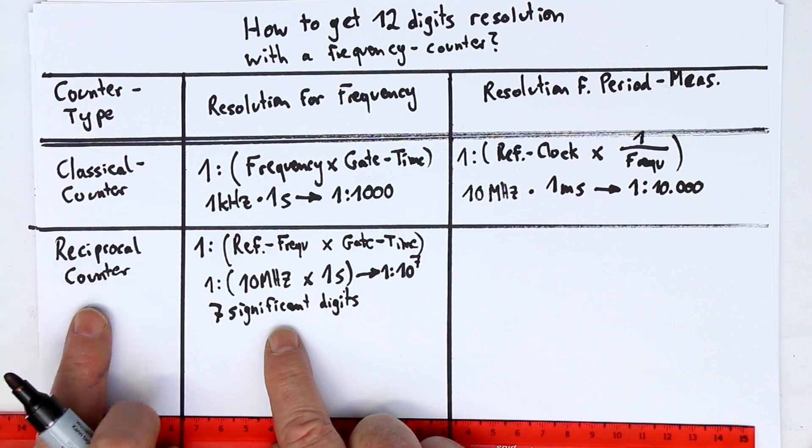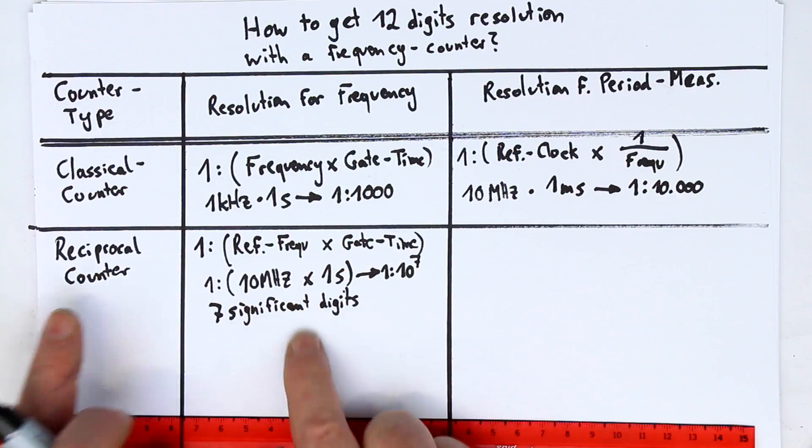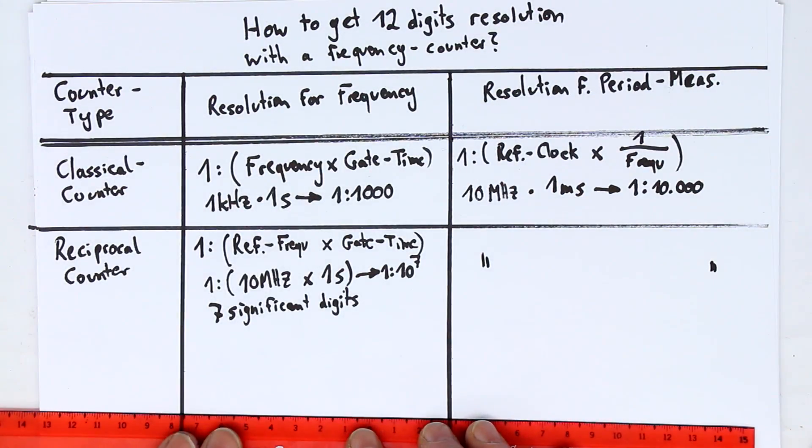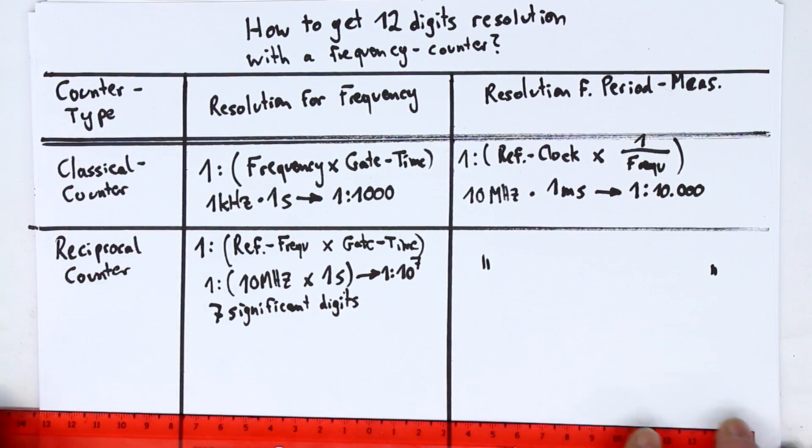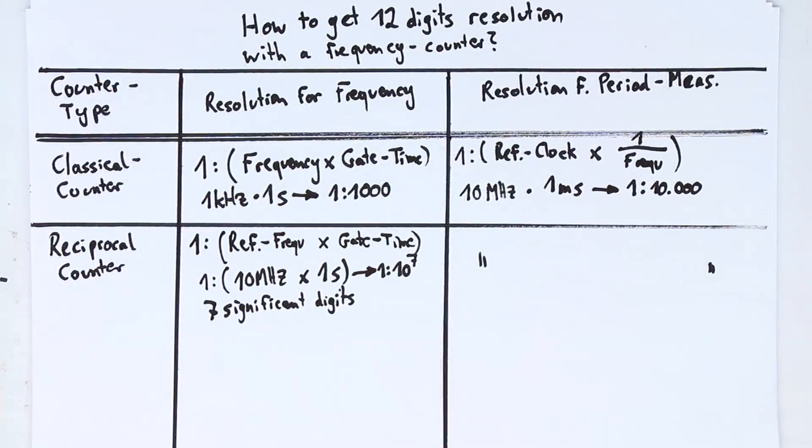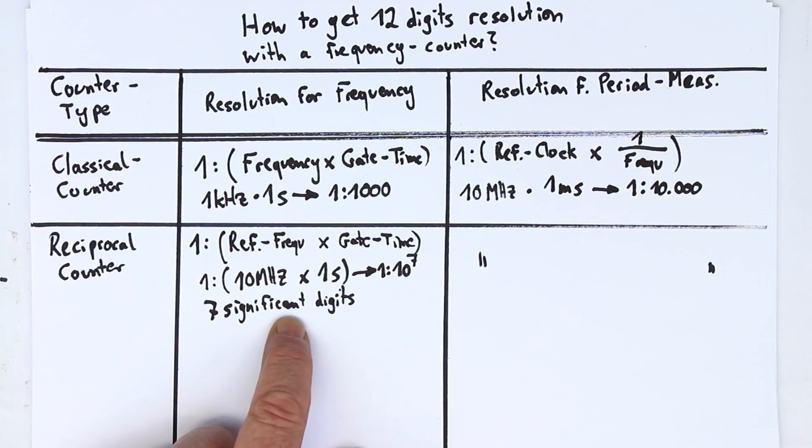And because the reciprocal counter basically is a period measurement counter, the resolution for period measurement is identical. So, we have reached 7 significant digits.